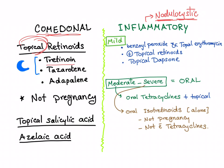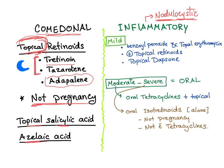Topical retinoids for comedonal acne include tretinoin, tazarotene, and adapalene. They should be used at night because they are deactivated by sunlight, except for adapalene. Importantly, do not use retinoids in pregnancy — even topical ones — as they are teratogenic and can cause abortion. Other options include topical salicylic acid or azelaic acid.